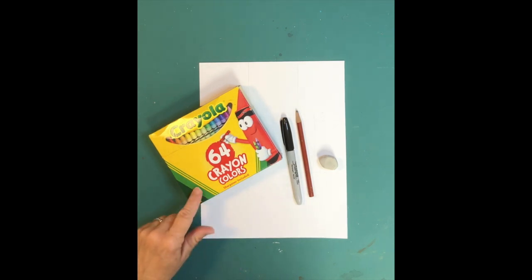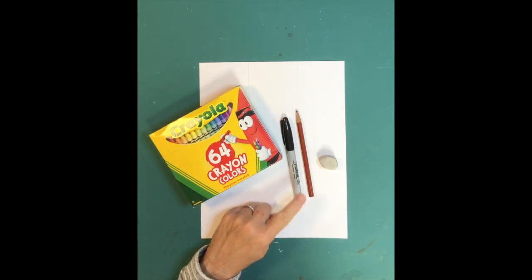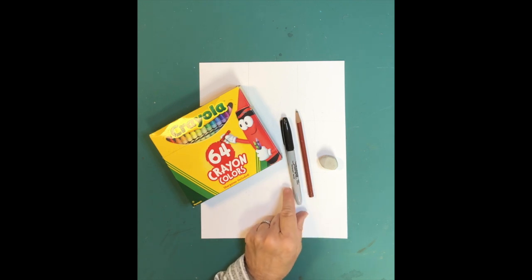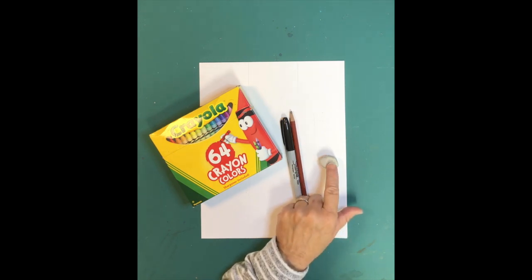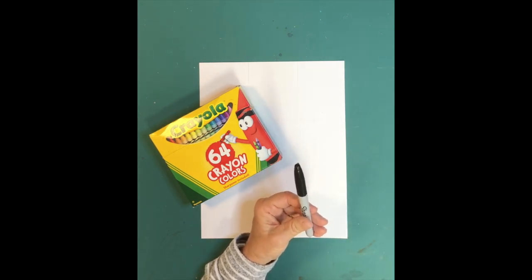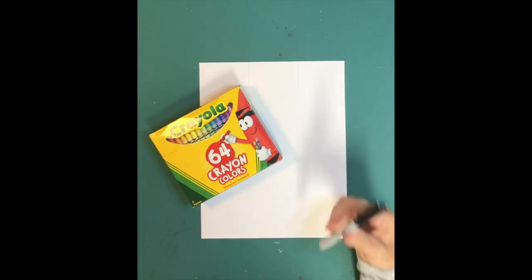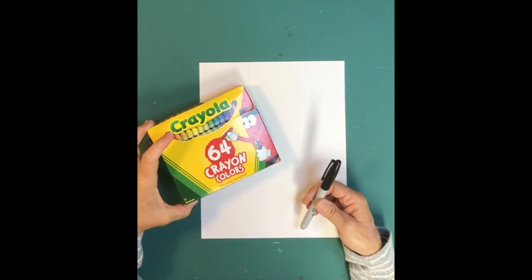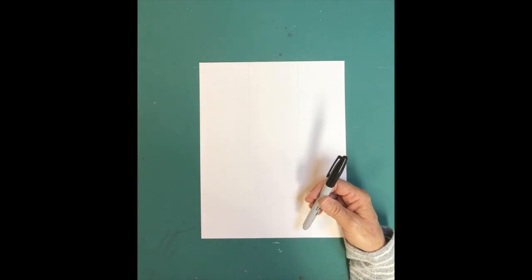Your paper, your crayons, a black marker, and if you want, instead of going directly to the marker, you can start out with a pencil, and if you use the pencil, you'll need an eraser. I'm going to be starting with the marker because it's easier for you to see it in the camera. If I use a pencil, it's really hard to see.